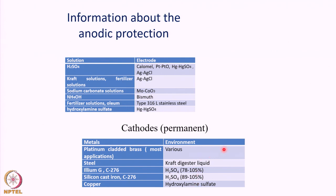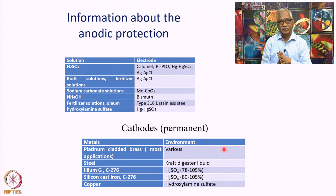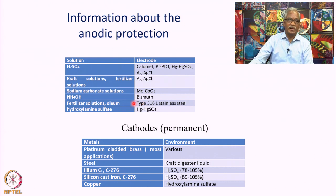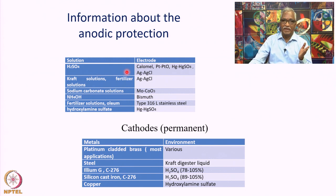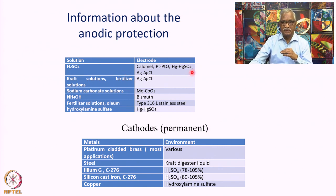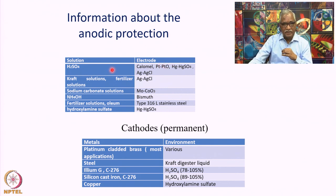For implementing anodic protection of engineering structures, various types of reference electrodes are needed. Generally, for sulfuric acid, contamination with chlorides should be avoided, and mercurous sulfate electrodes can be very useful. Depending upon the nature of the chemicals, a range of reference electrodes is applied in practice.